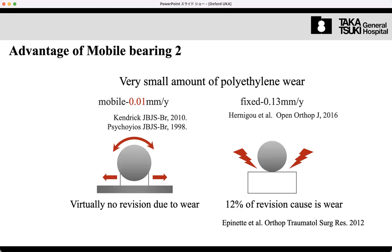According to previous reports, annual wear rate is 10 times smaller in mobile bearing than fixed bearing. The mobile bearing can dislocate but never causes wear.